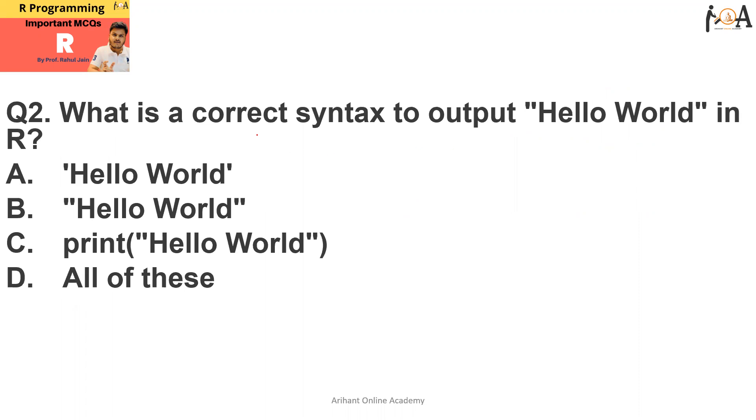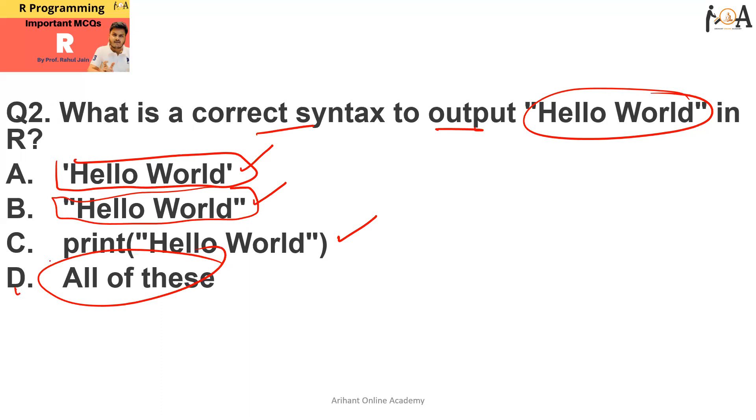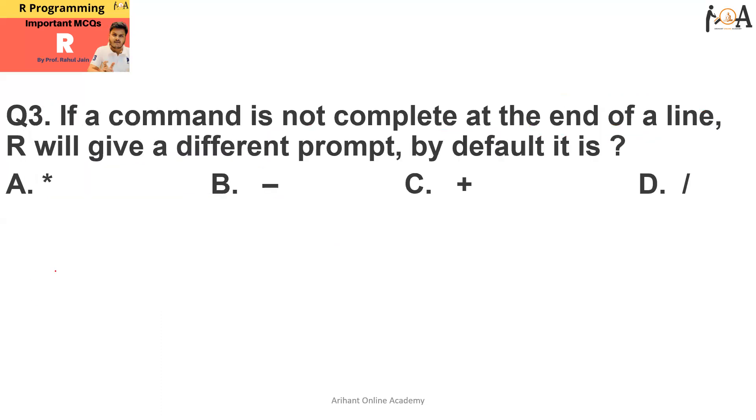Question number two is what is the correct syntax to output 'Hello World' in R? If you want to print 'Hello World', what is the correct syntax? If you observe, option A 'Hello World' will definitely work. Option B, 'Hello World' under double quotes, will also work. And print('Hello World') in double quotes will also work. That is why option D, all of these, is the most suitable option here.